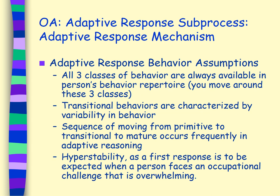All three classes of behaviors are always available in a person's behavior repertoire, and we all naturally move around these three different classes. Transitional behaviors are characterized by variability in behavior — when we're doing new occupations, we're going to transition between the three types. The sequence of moving from primitive to transitional to mature occurs frequently when we have to adapt. Hyperstability as a first response can be expected when a person faces an overwhelming challenge — we may say, that doesn't apply to me, or I don't want to deal with that anymore, and kind of shut down.